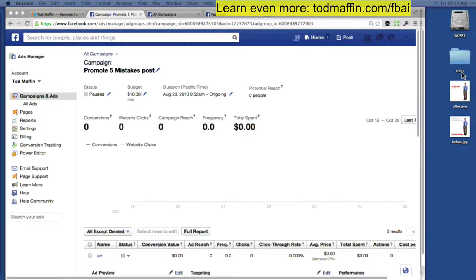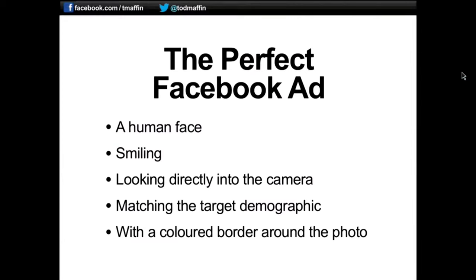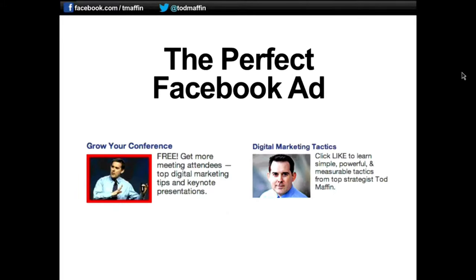Statistically these perform better — it may not be perfect for your business, but statistically we find it has five components. The perfect Facebook ad photo is a human face smiling, looking right into the camera, matching your target demographic. Also experiment with putting a colored border around the photo. Here are a couple of examples — that's what the custom border looks like on the left. On the right, a human face smiling and looking right into the camera really does resonate with people.